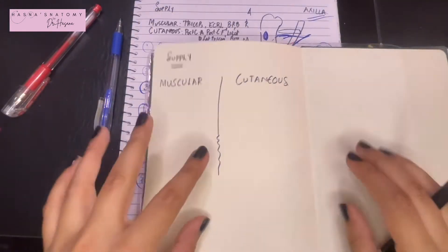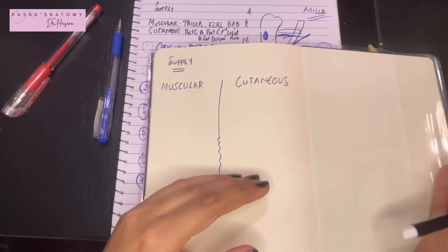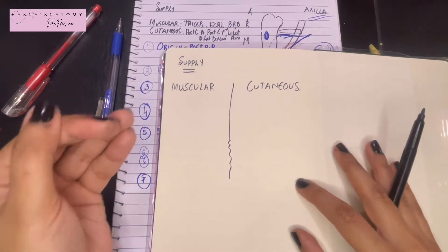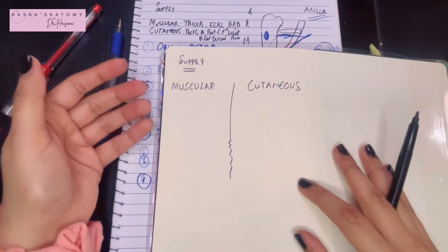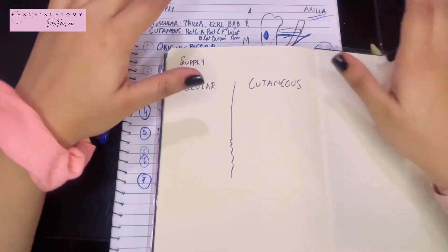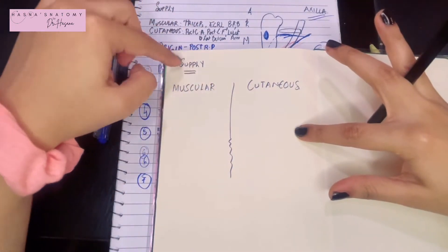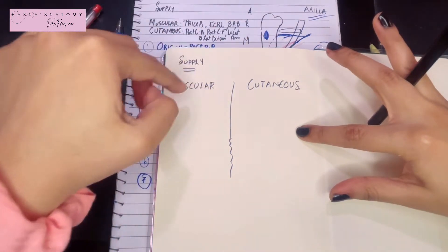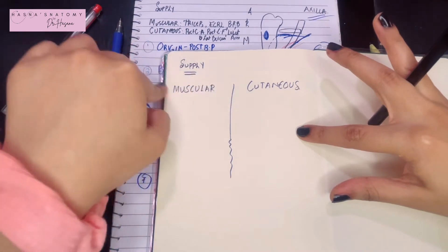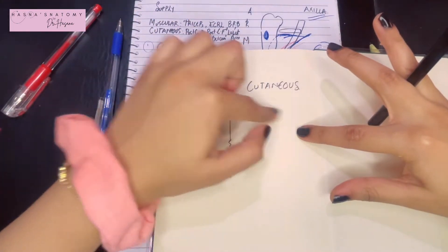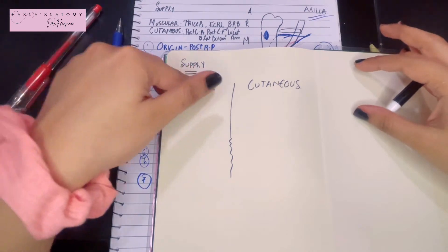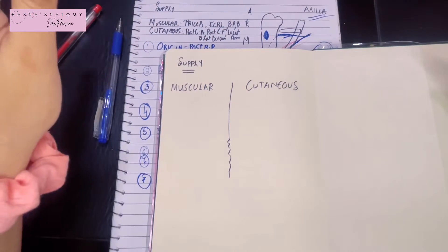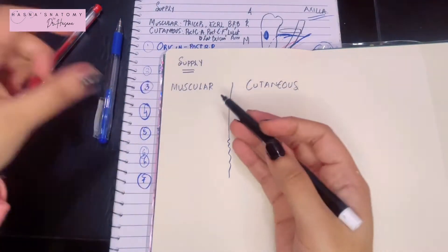I'm going to make it quite simple for you. I know that the radial nerve can be quite confusing, especially in relation to its branches, so it would be better if you draw with me and learn on the spot. Overall, let's first discuss what the radial nerve is going to supply in your entire upper limb — divide the supply into two parts: muscular supply, meaning it supplies muscles, and cutaneous supply, meaning it supplies the skin.